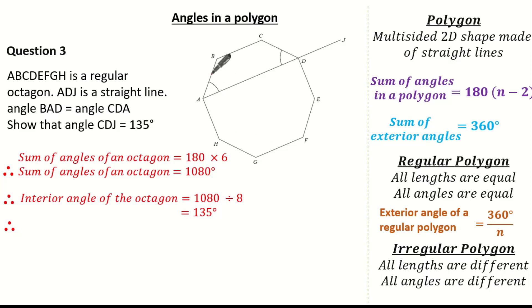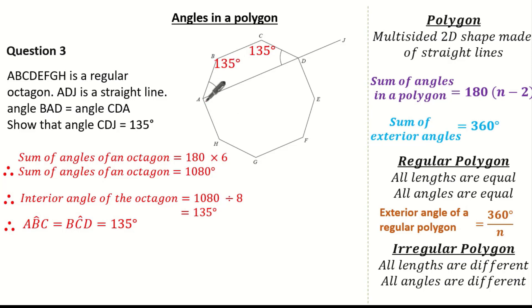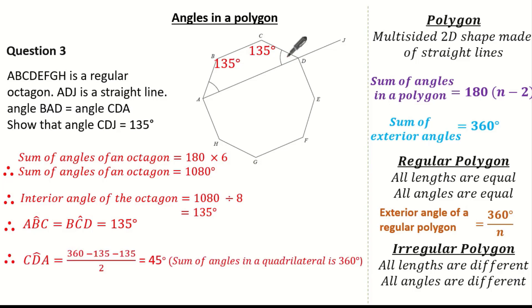Looking at angle ABC, I know it's going to be the same as BCD, so I can identify these two angles to be 135 degrees. Now looking at the quadrilateral formed — the sum of angles in a quadrilateral is 360 degrees. I also know angle BAD is the same as CDA. So I can work out angle CDA as (360 subtract 135 subtract 135) divided by 2, which gives angle CDA to be 45 degrees, because the sum of angles in the quadrilateral is 360.